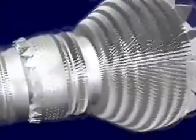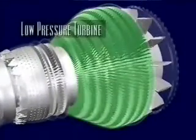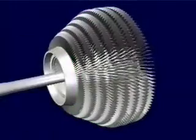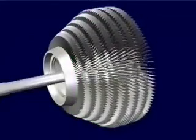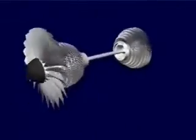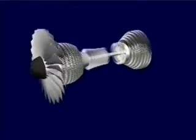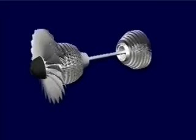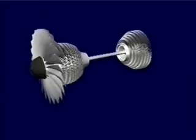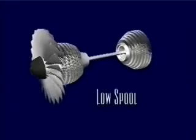Next, the air passes through the larger low-pressure turbine, which has two purposes. First, it extracts enough energy from the air to power the low-pressure compressor at the front of the engine core — these two components are connected via a second shaft that actually passes through the center of the high spool. However, the second and more important job of the low-pressure turbine is to turn the large titanium fan blades up front. The fan is connected to the same shaft as the low-pressure compressor and low-pressure turbine. Together, these three components make up the low spool.